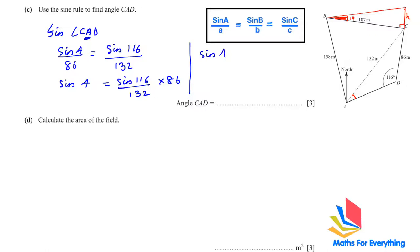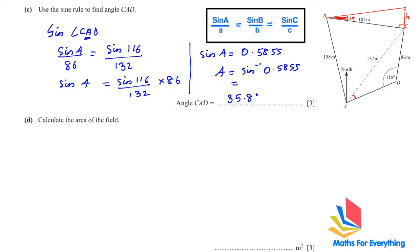This gives us 0.5855. To find the angle we take sin inverse of 0.5855, which gives us 35.8 degrees.